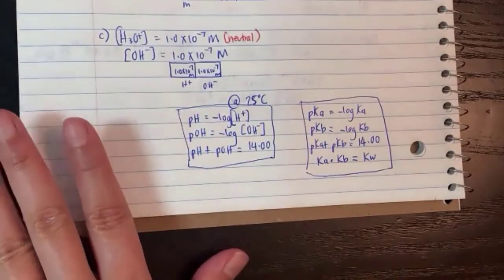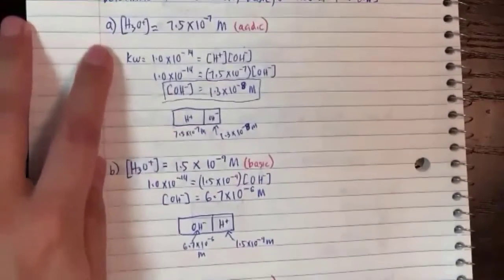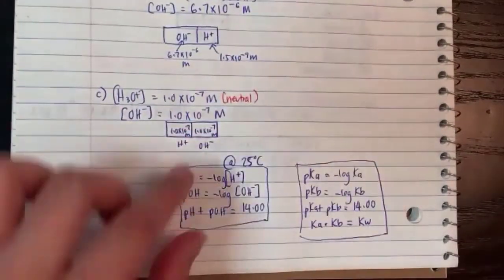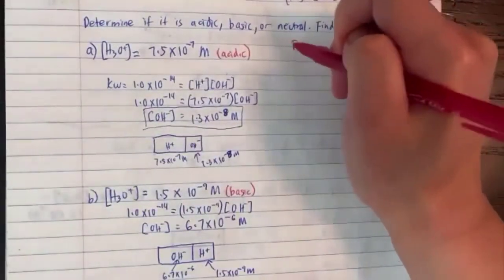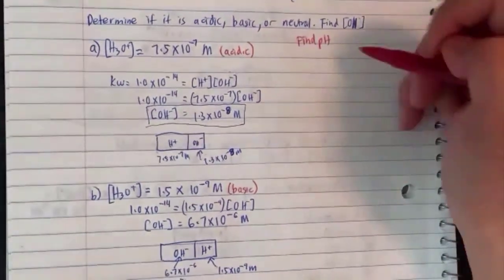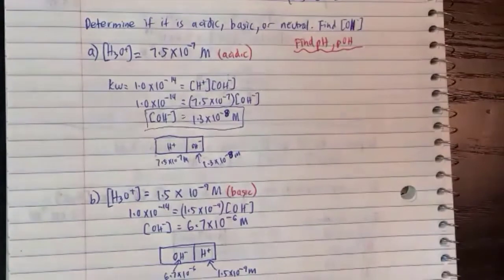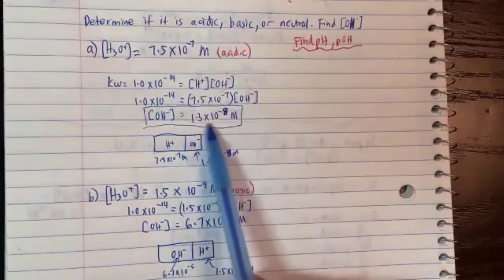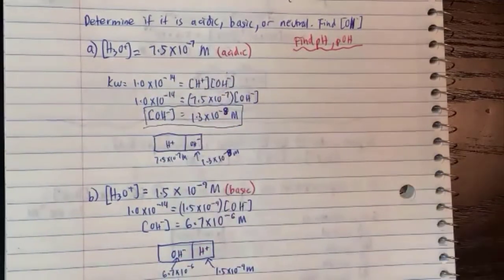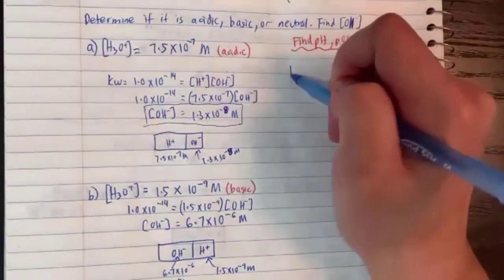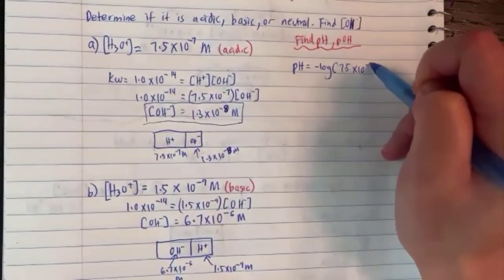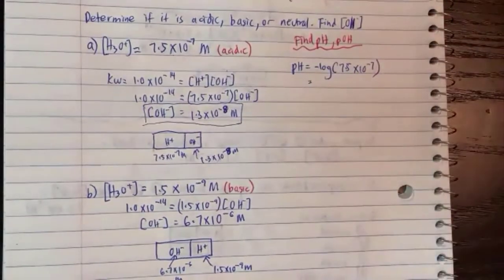Since we have the H⁺ and OH⁻ values from the previous solutions, we can get pH and pOH. The next assignment is: find pH and pOH as well. pH is minus log of H. For part A, pH equals minus log of 7.5×10⁻⁷.